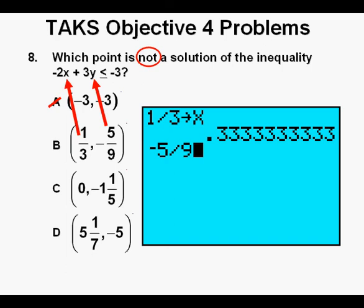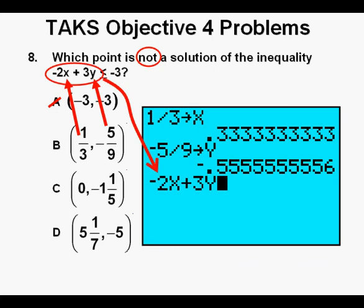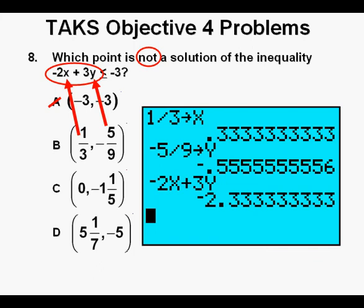Next we place our Y coordinate negative 5 ninths in place by taking negative 5 divided by 9. We press the storage key as we did earlier. Now we enter Y by pressing alpha then the 1 key. Then press enter. Next we enter the left side of the inequality negative 2X plus 3Y. Then press enter.